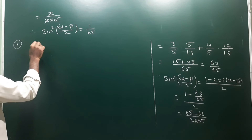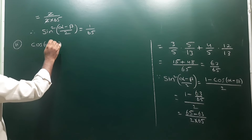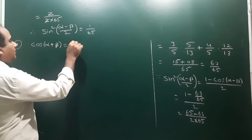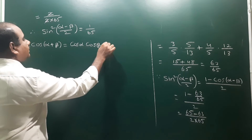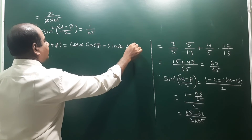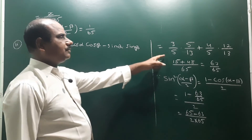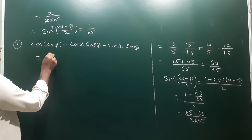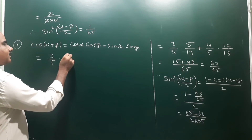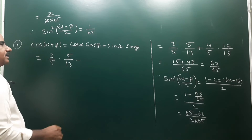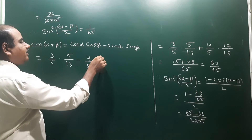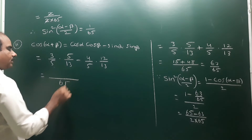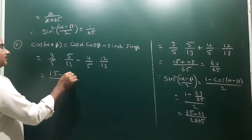For the second question, we need to find cos(α+β). The formula is cos(α+β) = cos α cos β − sin α sin β = (3/5)(5/13) − (4/5)(12/13). LCM is 65. This gives 15/65 − 48/65.